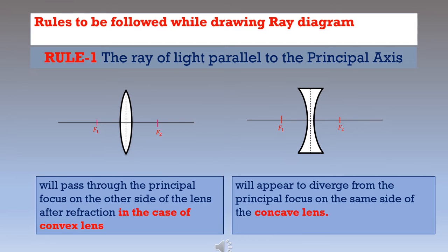There are some rules to be followed while drawing ray diagrams. Rule 1 is about the ray of light parallel to the principal axis. In the case of a convex lens, the ray of light parallel to the principal axis will pass through the principal focus on the other side of the lens after refraction, as shown in the diagram.